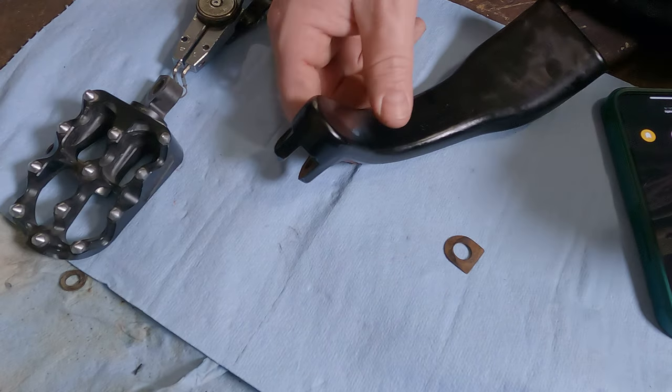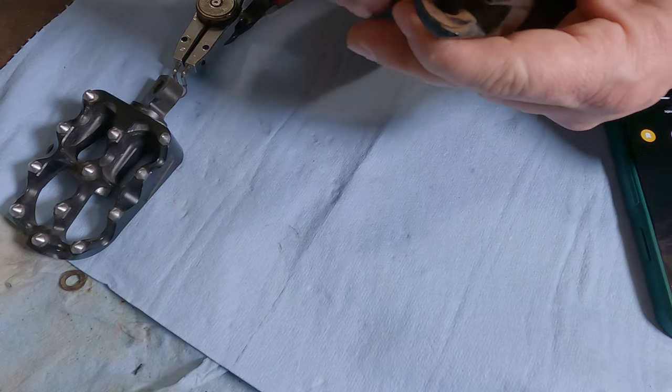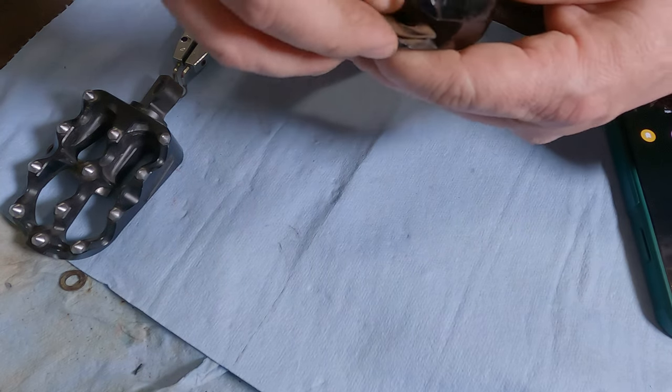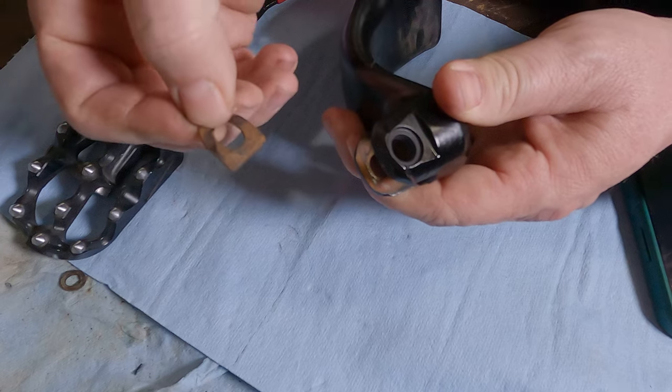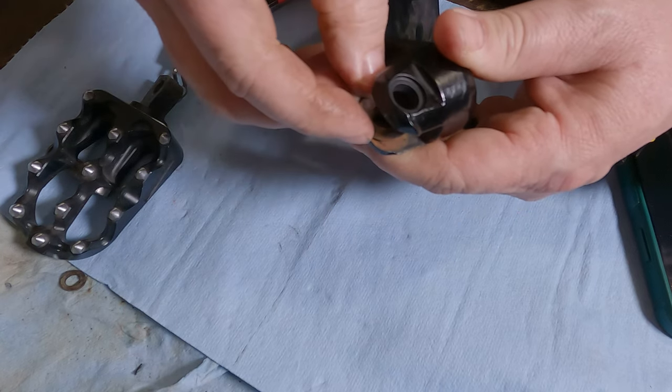So to reinstall your new foot peg, I would recommend sliding this thing in there first. And it goes in squared off end first. Slide it right up in there.